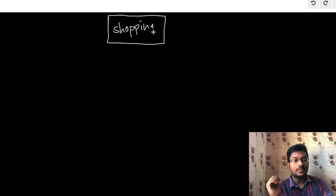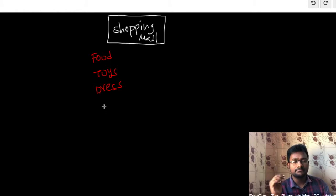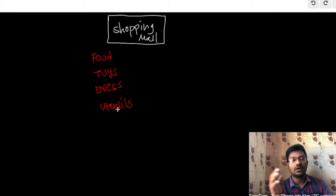In a shopping mall, we can buy many kinds of products. For example, we can buy food products, we can buy toys, we can buy dress, and we can buy utensils. So these are the four categories of products that we can buy in a shopping mall.